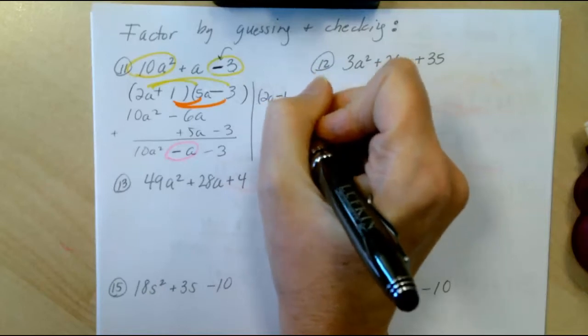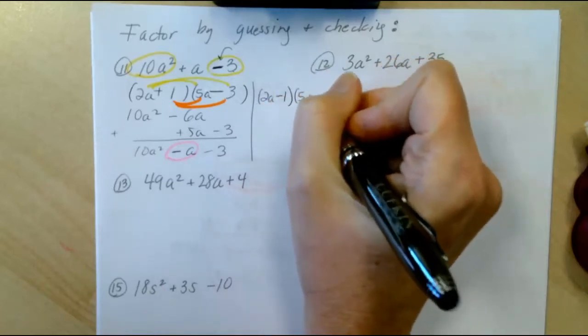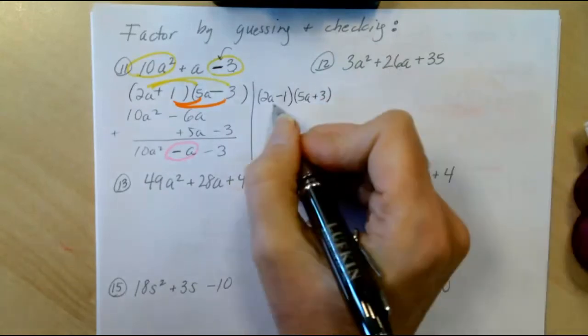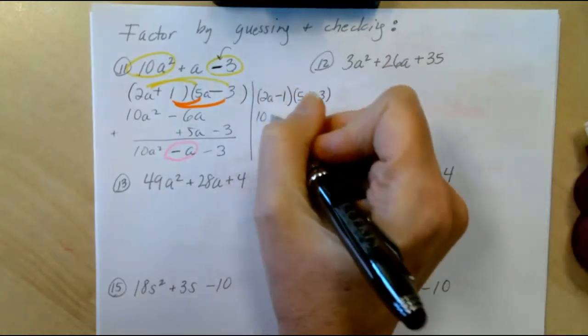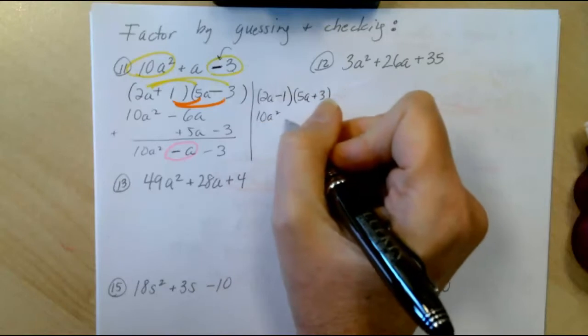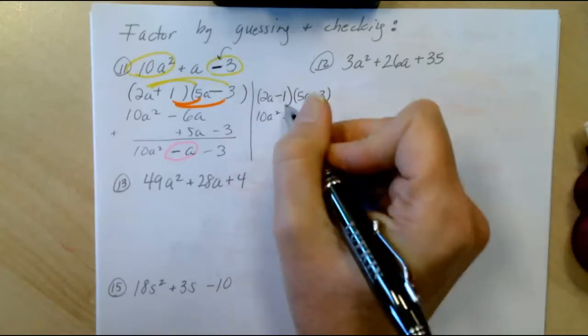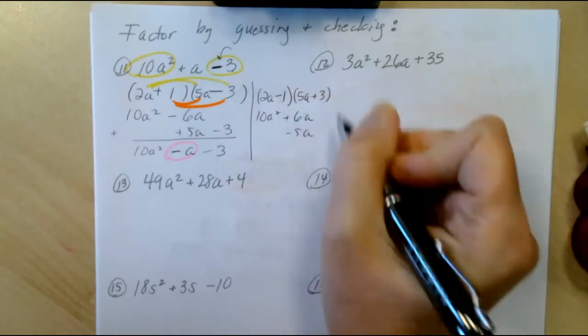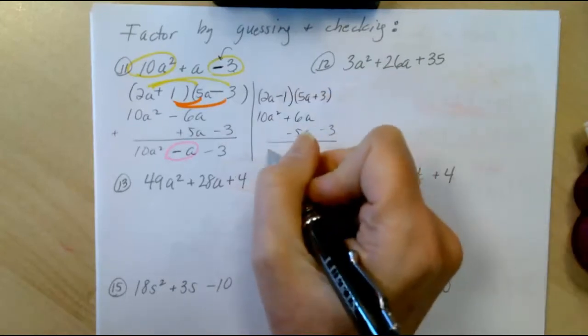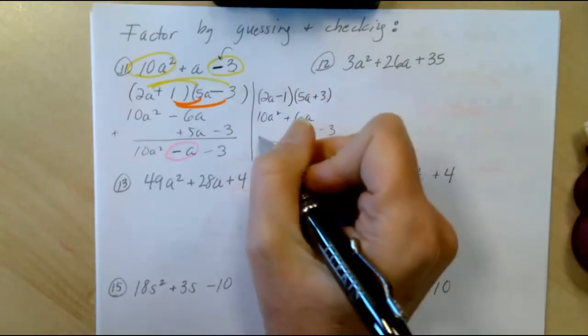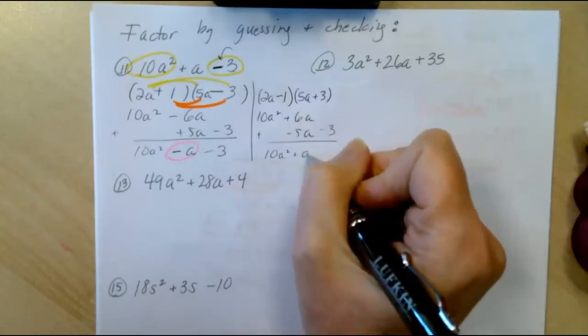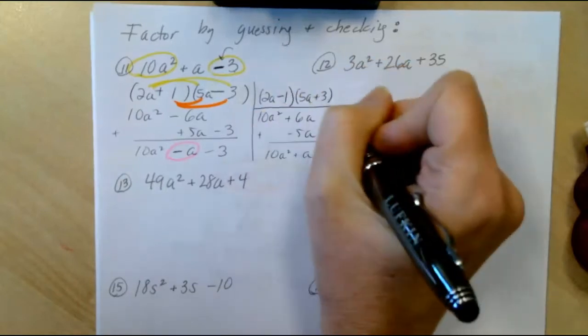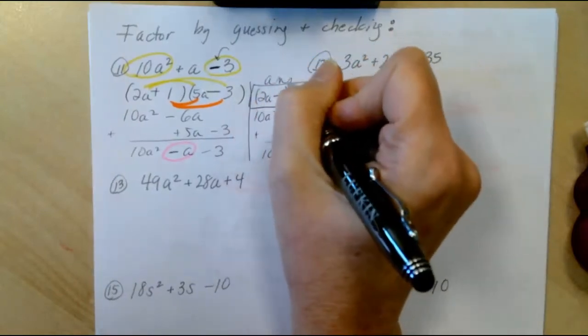So my correct answer is going to be 2a minus 1 times 5a plus 3. I'll give that a quick check. 2a times 5a is 10a squared, 2a times 3 plus 6a, negative 1 times 5a, negative 5a, negative 1 times 3, negative 3. This time, I do get the correct answer when I add, I get the positive a in the middle. And this is the answer.